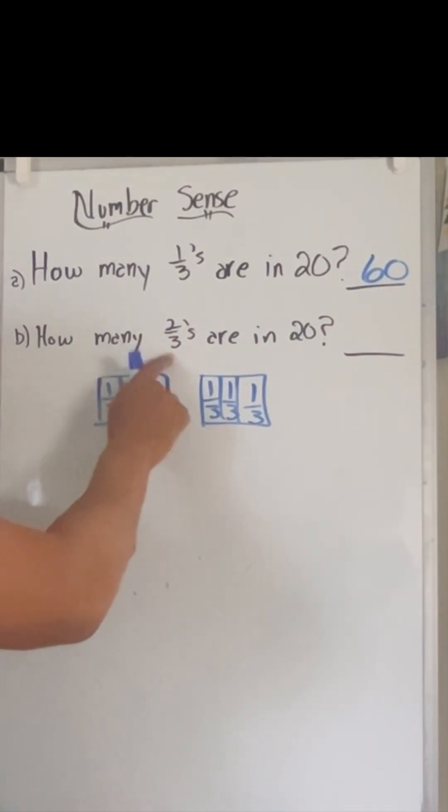The next one is how many two-thirds are in 20? Well, if one-thirds are 20, we want to think, would there be more or would there be less? And so we think about this, and we look at the fact that,